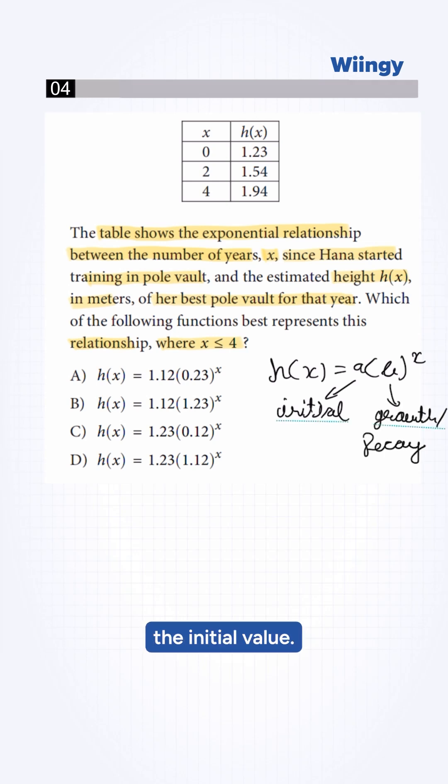We need to find the initial value. So, initial value a is the output when the input is x equals 0. From the table, the point 0 and 1.23, therefore a will be 1.23. This eliminates options a and b.